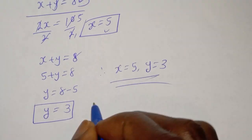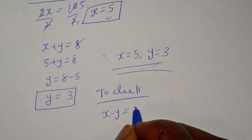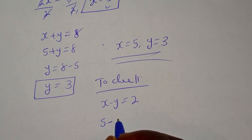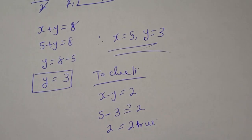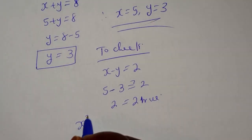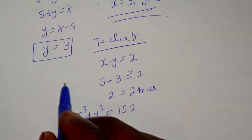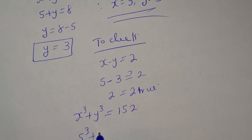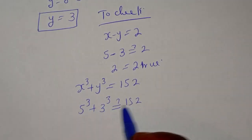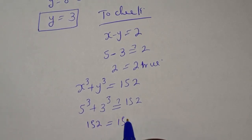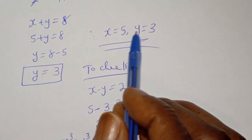Let's check to confirm. Using equation 2: x - y = 5 - 3 = 2, which equals 2 — true. Using equation 1: x³ + y³ = 5³ + 3³ = 125 + 27 = 152, which equals 152 — also true. Therefore our final answers, x = 5 and y = 3, are confirmed correct.